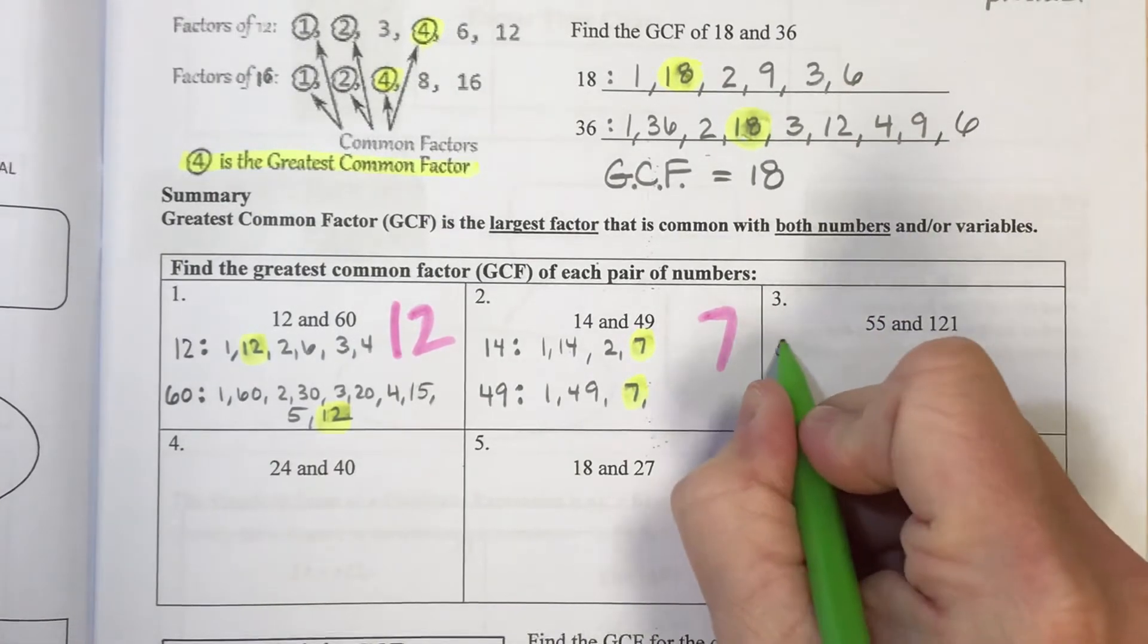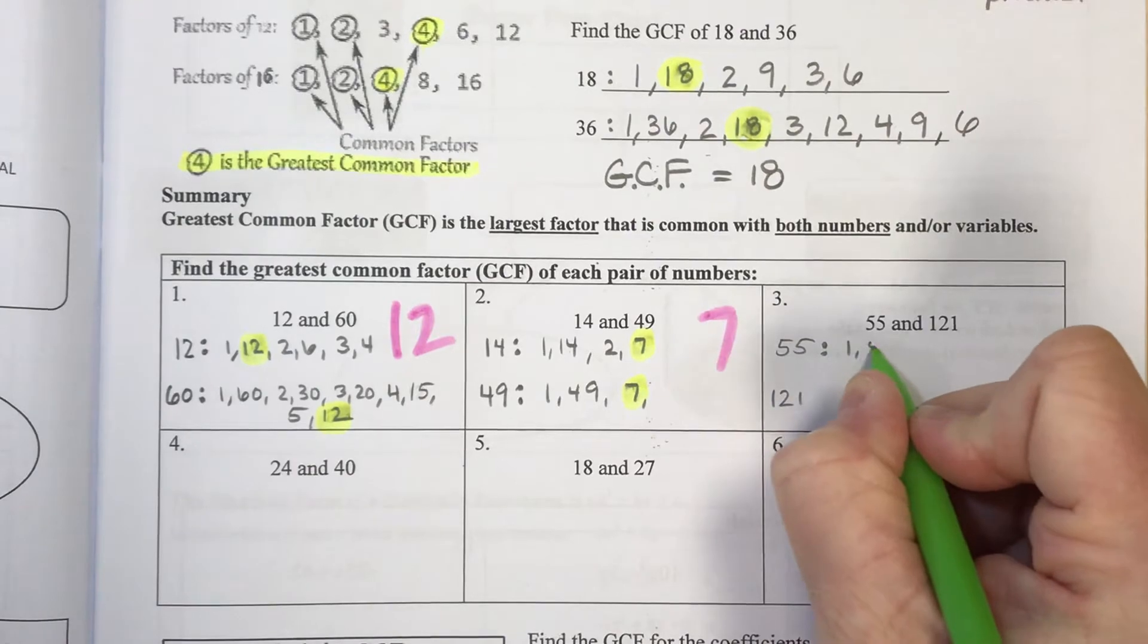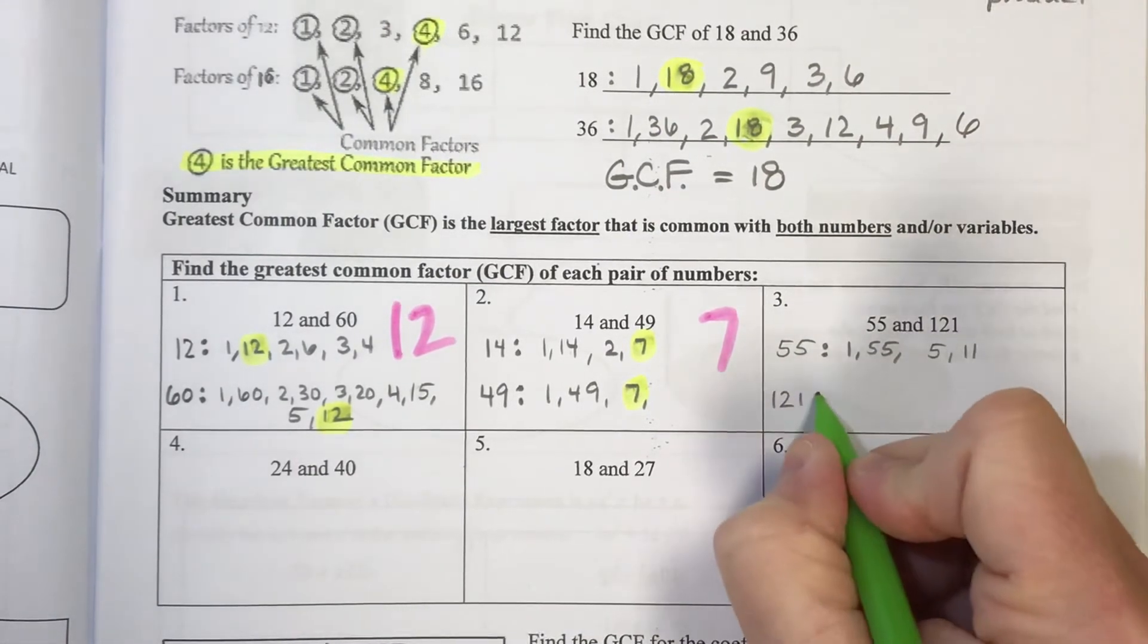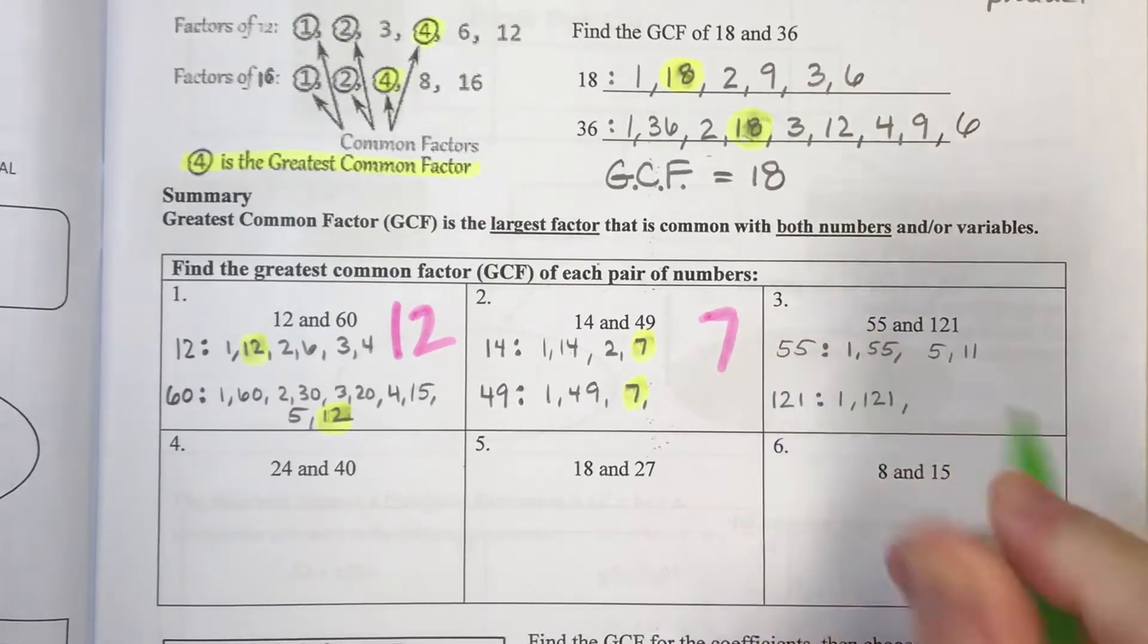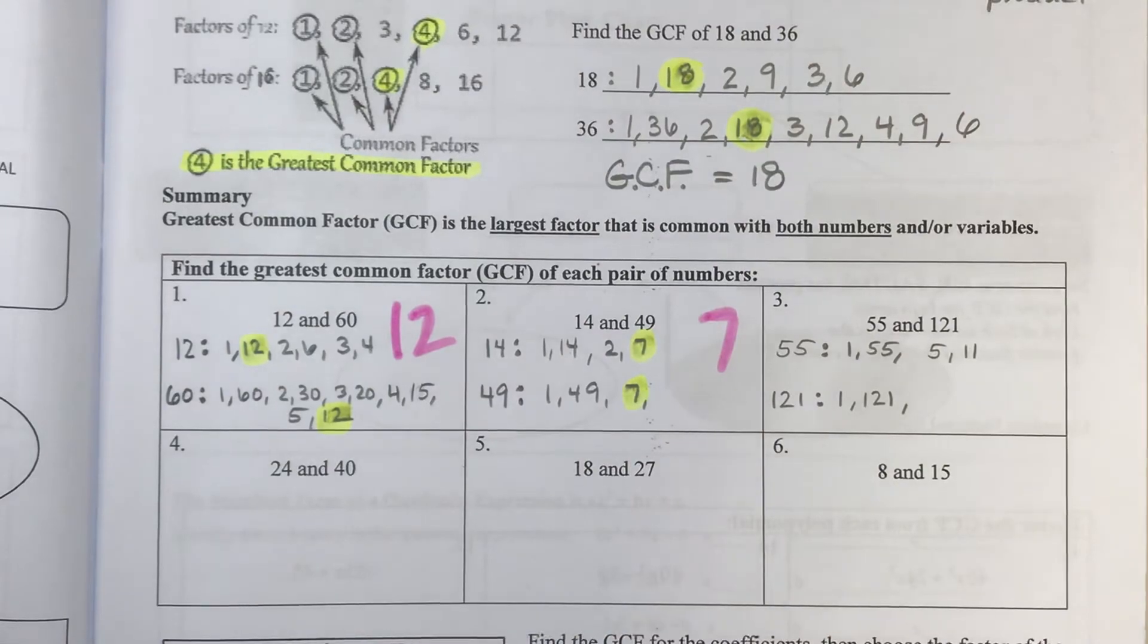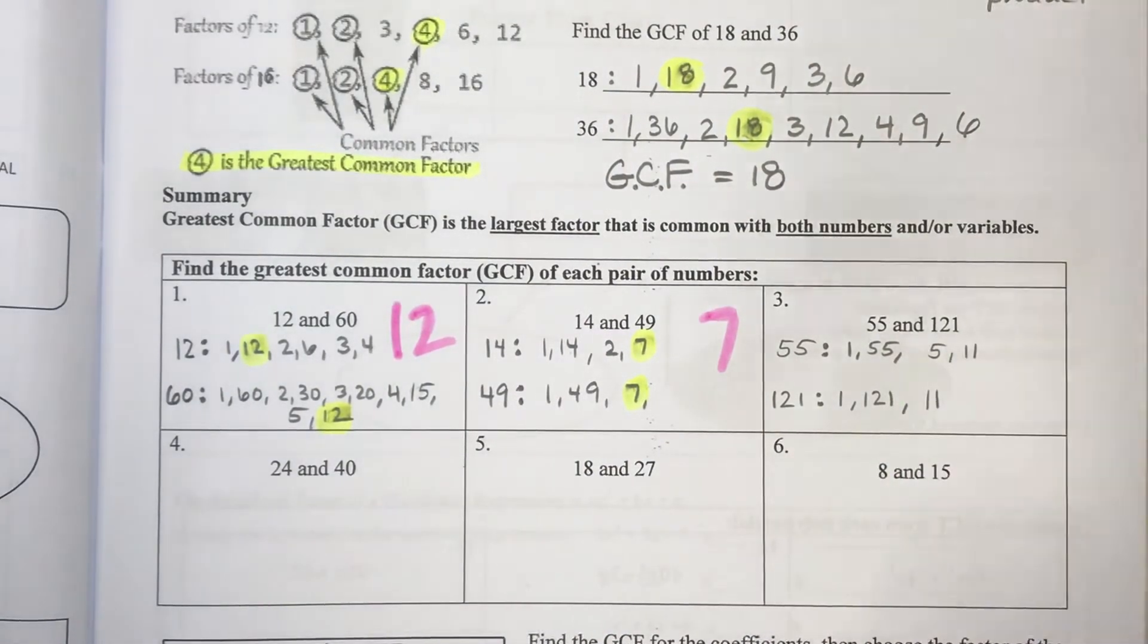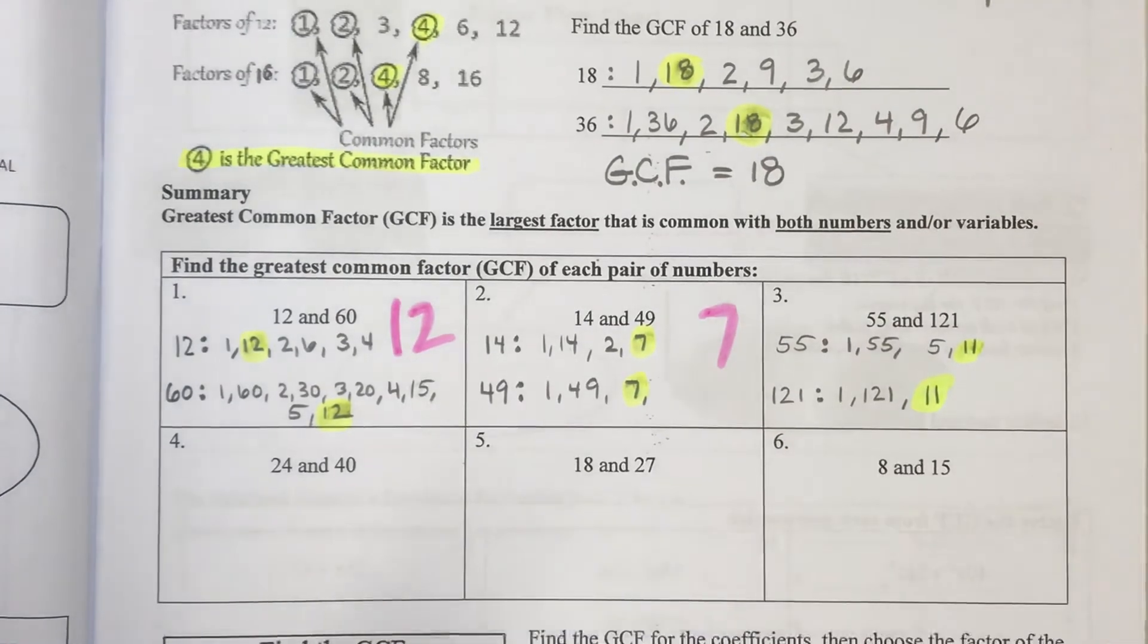For the numbers 55 and 121. 1 and 55. I'm confident 5 goes in there. 5 goes in 11 times. For 121, 1 goes in times 121. And I think 121 is divisible by 11. Oh yeah, it is 11 times 11. So 11 would be our greatest common factor from both of our lists.